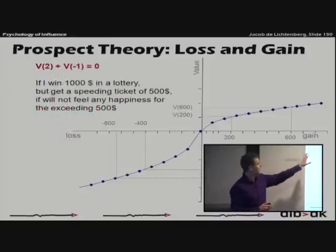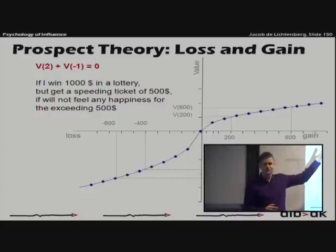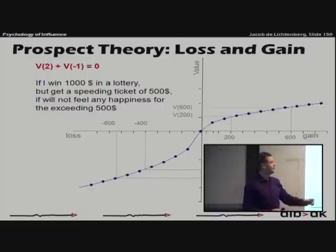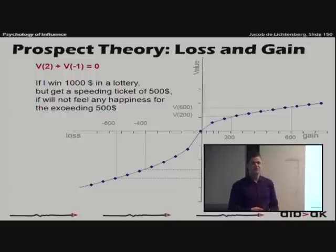Well, if you actually win $1,000 in a lottery, but just afterwards you get a speeding ticket of $500, expected utility theory would say you're $500 happy. But prospect theory says you're not $500 happy. You are $500 lost dollars unhappy. And that summed up with the $1,000 you have is the $500. You're not going to be happy at all. So even though you gain $500, you're not going to be happy.